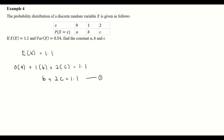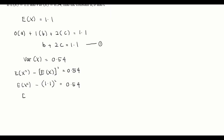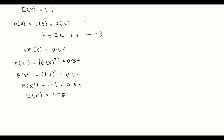From the second piece of information, the variance of x is 0.54. We use the formula: Var(X) = E(X²) minus [E(X)]². So E(X²) minus 1.1 squared equals 0.54, which gives us E(X²) minus 1.21 equals 0.54, therefore E(X²) equals 1.75.